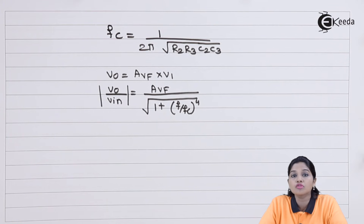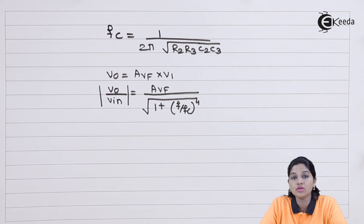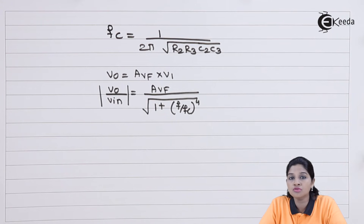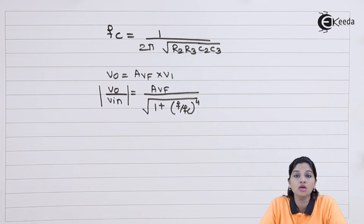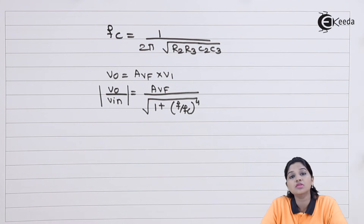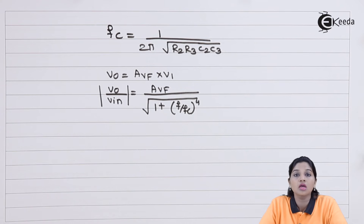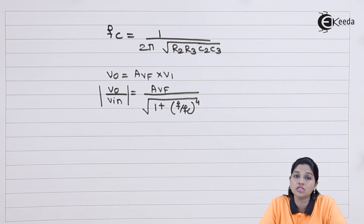We can analyze the response of the second order Butterworth low pass filter using this equation. If the frequency is below FC, the gain remains constant and equals AVF. At F equals FC, the gain is reduced to 0.707 AVF, which is minus 3 dB of maximum gain. When the frequency increases above FC, the gain decreases at a rate of minus 40 dB per decade. The roll-off rate doubles as the order of the filter increases, and the negative sign indicates decreasing gain in the stop band.